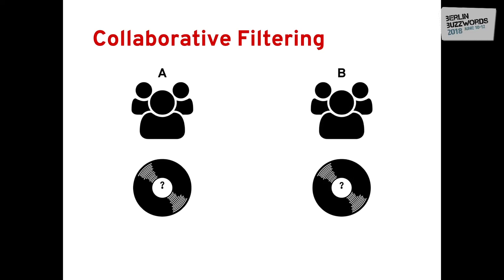We use collaborative filtering quite frequently in our daily life, and it really seems like common sense. The main principle is that a group of people with similar tastes are more likely to agree on some unknown product. For instance, imagine you have a group of friends with very similar musical taste — Group A — and another group with very dissimilar musical taste — Group B. If Group A recommends you an album and Group B recommends you another, you're going to choose Group A. That's collaborative filtering in a nutshell.